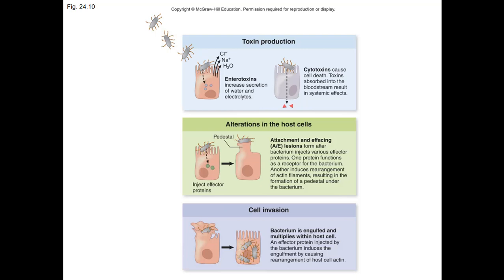Some bacteria could literally take the microvilli, flatten them out, and use that flattening platform to force their way inside the cytoplasm of the cell. Main pathogenic mechanisms include attachment, toxin production — either increasing host cell secretion of water or electrolytes, or killing the host cell — cell invasion, and loss of microvilli. Usually a pedestal or platform is created to stop absorption and allow cell entry. When you lose microvilli, you lose that extra surface absorption area for nutrients, so the patient is getting sicker not just from toxins and bacteria multiplying but also from altered intestinal lining physiology.